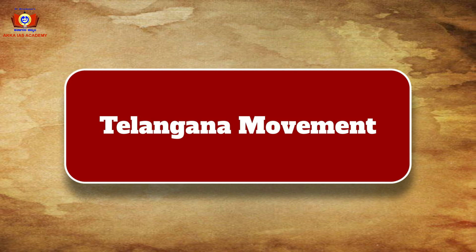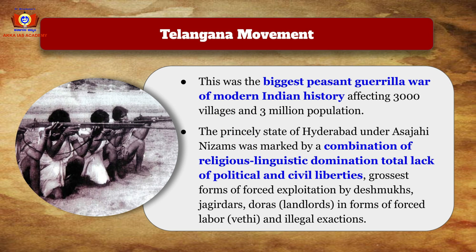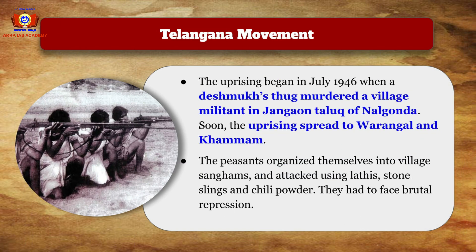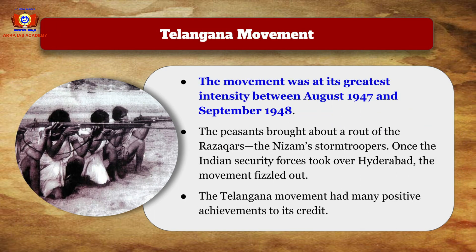The Telangana Movement proved to be the biggest peasant guerrilla war of modern Indian history, affecting 3,000 villages and 3 million people. The princely state of Hyderabad under the Asaf Jahi Nizams was marked by religious and linguistic domination, total lack of political and civil liberties, and gross exploitation by Deshmukhs, Jagirdars, and Dorras through forced labor and illegal extractions. The uprising began in July 1946 when a Deshmukh's thug murdered a village militant in Jangaon Taluk of Nalgonda, and soon spread to Warangal and Khammam. Peasants organized themselves into village Sangams and fought back with lathis, stones, slings, and chili powder despite brutal repression.